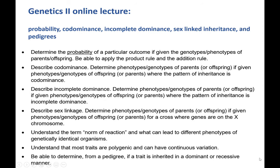This final genetics lecture is going to cover some additional information that makes genetics a little more complicated. We'll cover probability, two different types of dominance inheritance, sex-linked inheritance, and pedigrees.